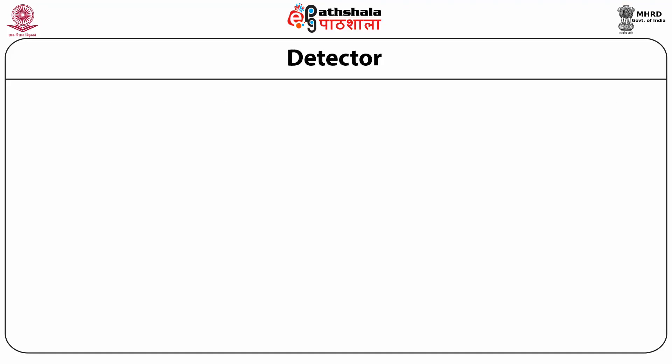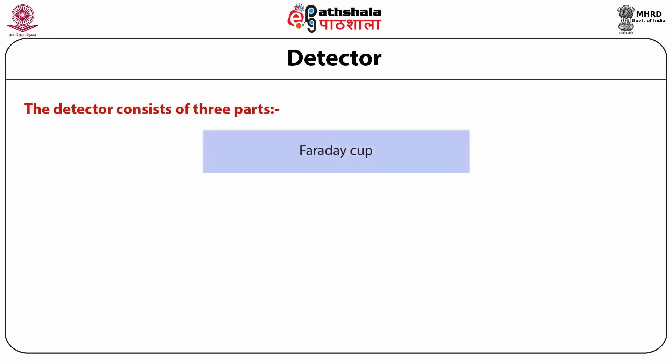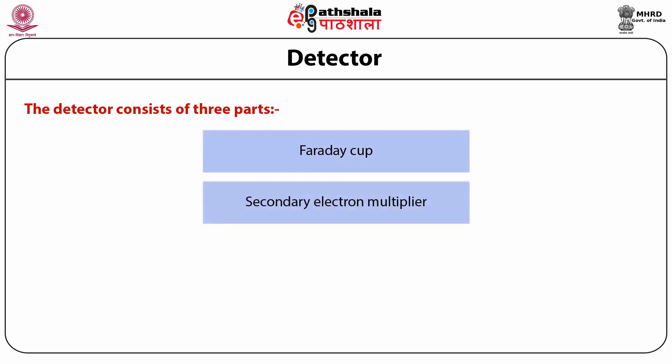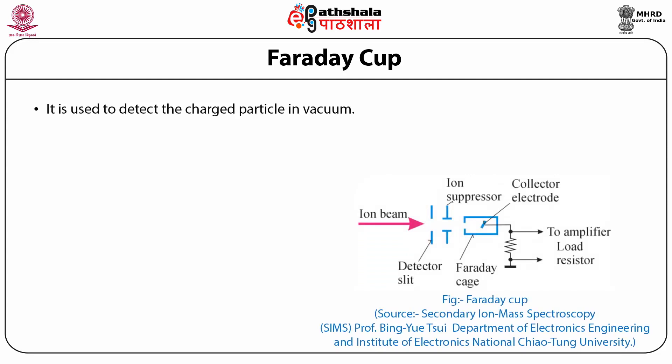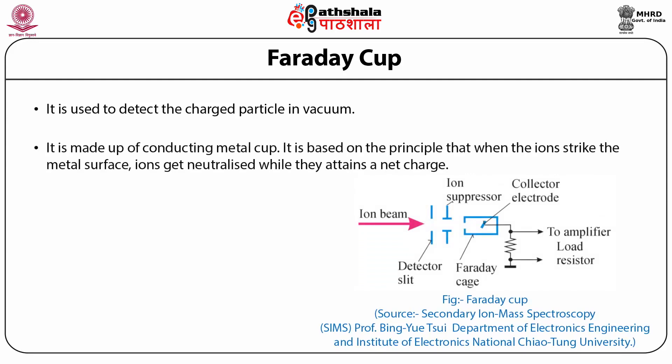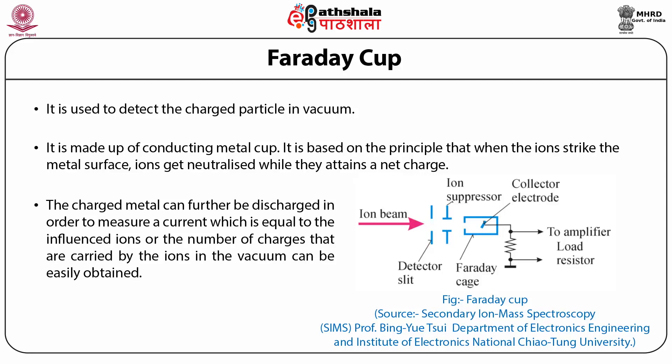The third important component is the Detector, which consists of three parts: Faraday Cup, Secondary Electron Multiplier, and Micro Channel Plate. The Faraday Cup is used to detect charged particles in vacuum. It is made of a conducting metal cup and is based on the principle that when ions strike the metal surface, they get neutralized while attaining a net charge. The charged metal can be discharged to measure a current equivalent to the incident ions, and the number of charges carried by ions in the vacuum can be easily obtained.